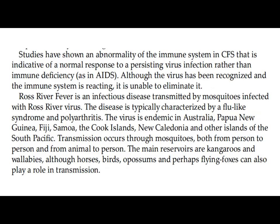Ross River fever is an infectious disease transmitted by mosquitoes infected with Ross River virus. The disease is typically characterized by a flu-like syndrome and polyarthritis. The virus is endemic in Australia, Papua New Guinea, Fiji, Samoa, the Cook Islands, New Caledonia, and other islands of the South Pacific. Transmission occurs through mosquitoes both from person to person and from animal to person. The main reservoirs are kangaroos and wallabies, although horses, birds, opossums, and perhaps flying foxes can also play a role in transmission.